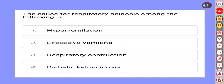The cause for respiratory acidosis among the following is: Option 1: Hyperventilation. Option 2: Excessive vomiting. Option 3: Respiratory obstruction. Option 4: Diabetic Ketosis.